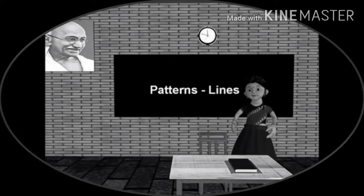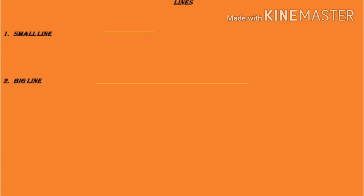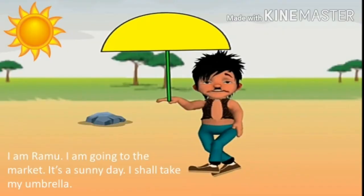Hello children, today we will study about lines — big line and small line. Small means chota, so small line is choti line. Big means bada, so big line means badi line.